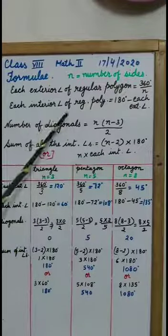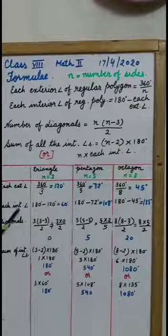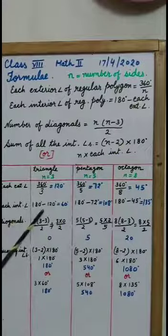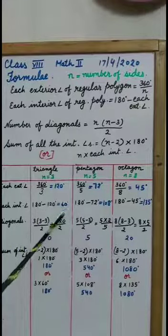Each interior angle is 180 degrees minus each exterior angle. So, the same thing we have done each interior angle equal to 180 degrees minus 120 degrees equal to 60 degrees.